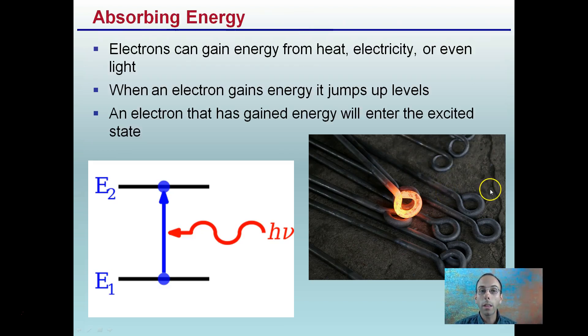So absorbing energy. Electrons can gain energy from heat, electricity, or even other light sources. When an electron gains energy, it jumps up in energy levels. We see that here. Here's an electron gaining energy, jumping up an energy level. An electron that has gained energy will enter what we call the excited state. Electrons can't exist in between, they can only exist at different energy levels. So here we're gaining energy, jumping up an energy level. We really don't visually see anything happen when this occurs, but that electron now is in the excited state.